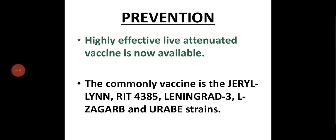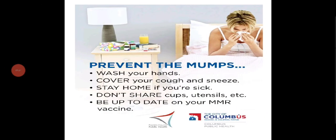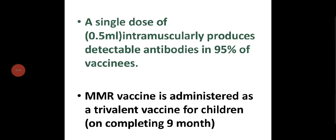A highly effective live attenuated vaccine is now available — strains include Jeryl Lynn, Leningrad-3, Zagreb, and Urabe. A single dose of 0.5 ml intramuscular injection produces detectable antibodies in 95% of vaccines. The MMR vaccine is administered as a trivalent vaccine for children on completing nine months. General prevention includes washing hands, covering coughs and sneezes, staying home when sick, and not sharing cups or utensils.